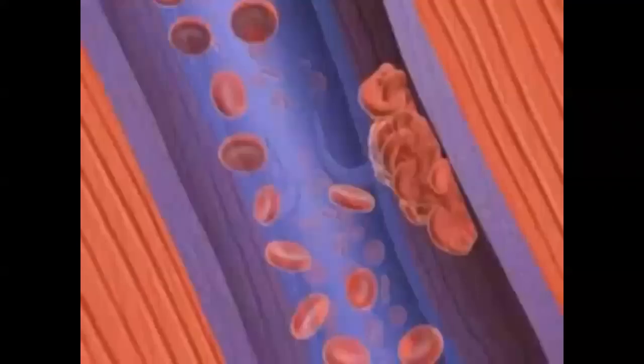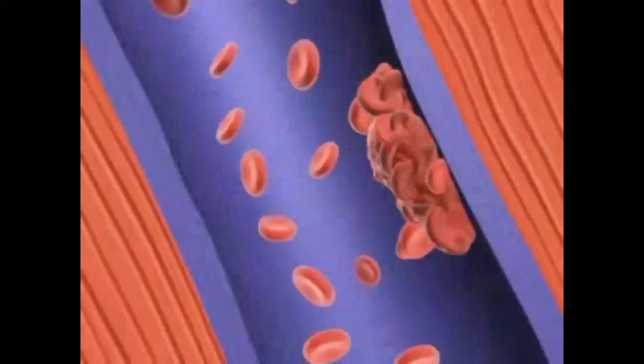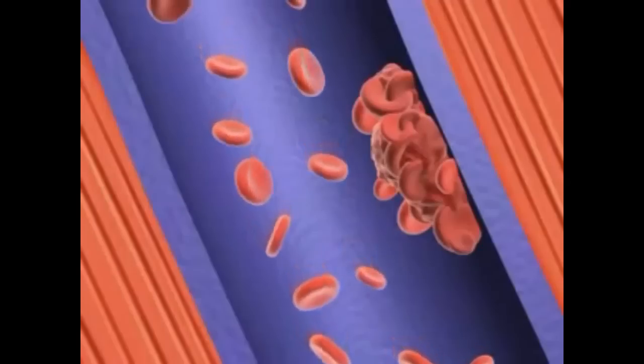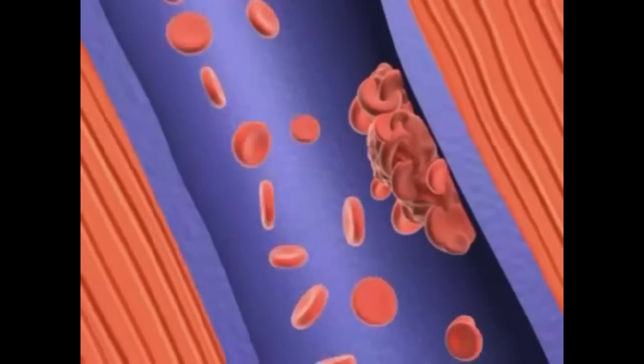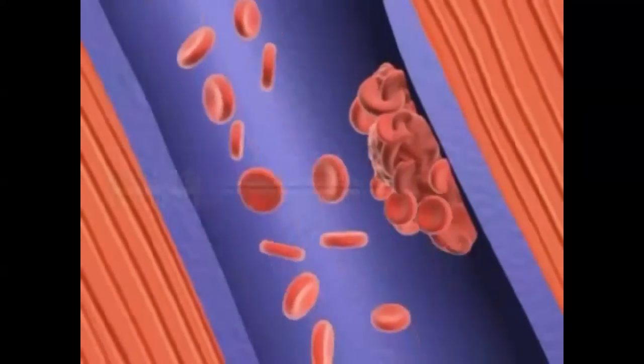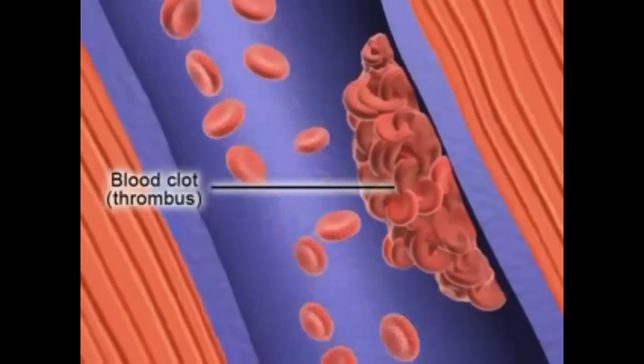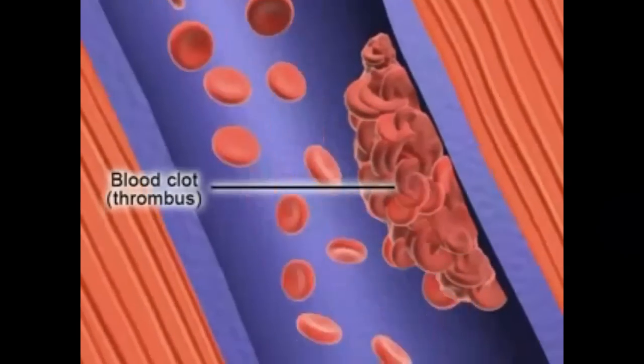DVT is where a blood clot, or thrombus, forms in a deep vein. It partly or completely blocks the flow of blood through the vein.